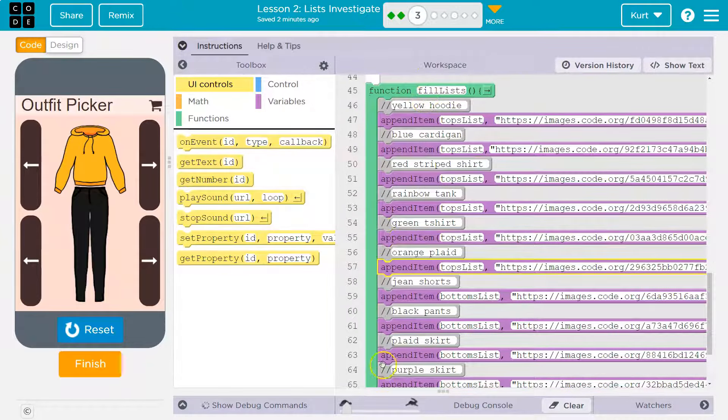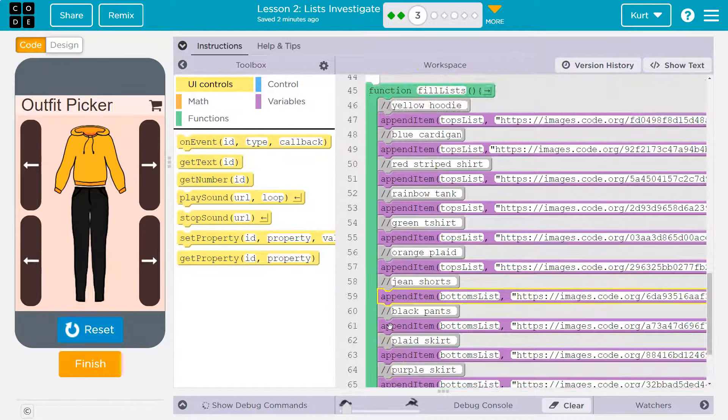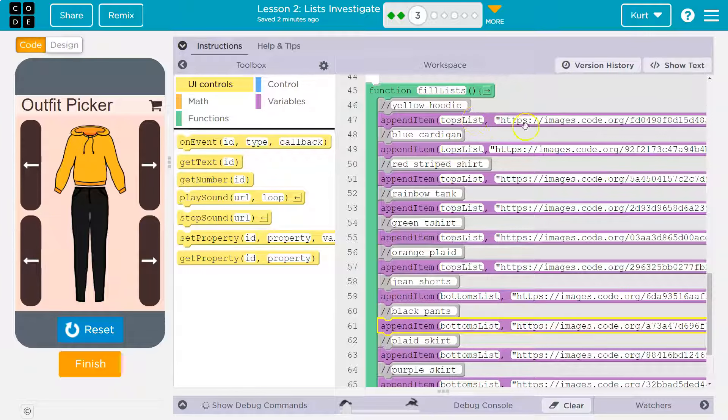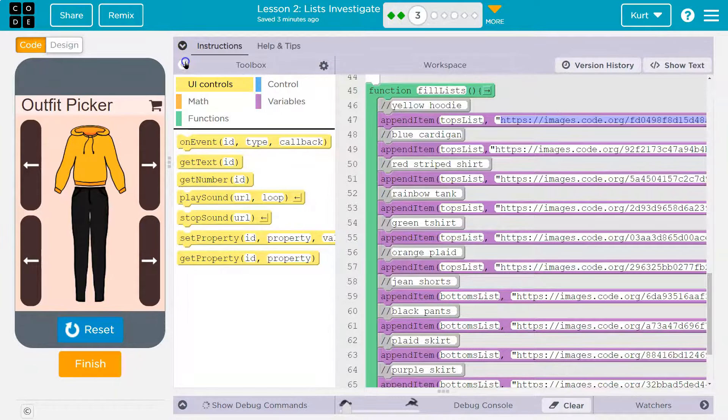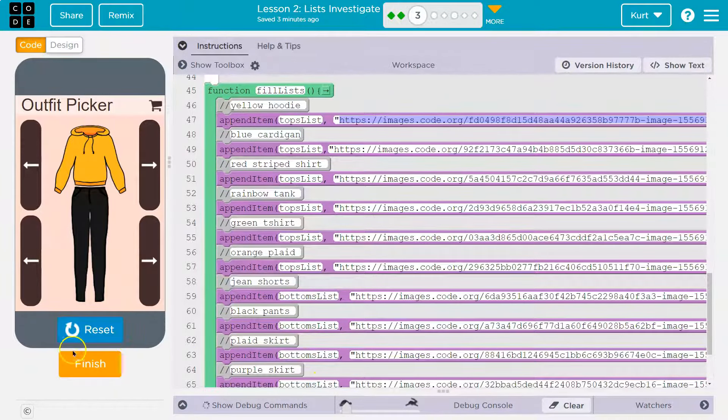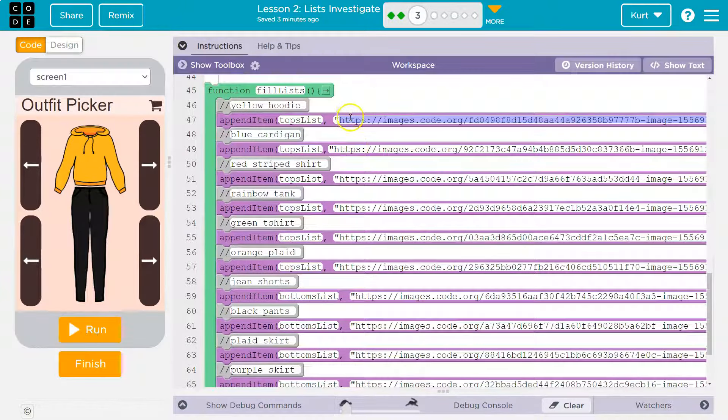Oh, but it will do fill lists. And so what it's doing here, it's adding all of these, each one of these images, right? Because this is an HTML image. I'm going to reset. Each one of these images is getting added to our list. What list? The top list.